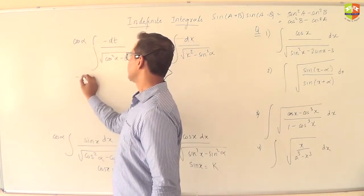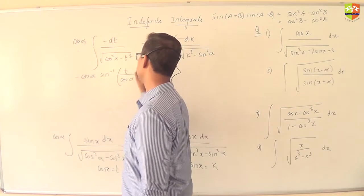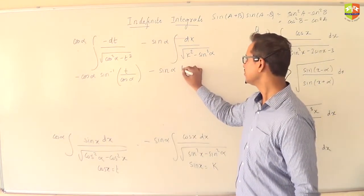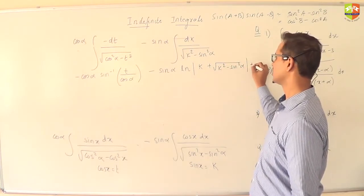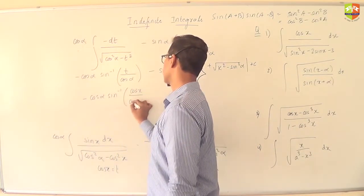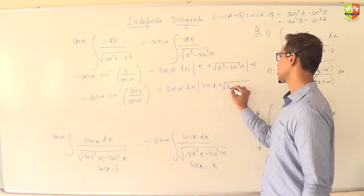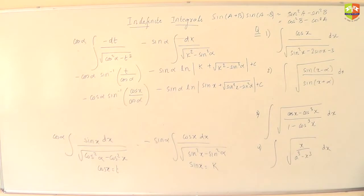So can I say this becomes minus dt cos alpha by the root of cos square alpha minus t square, and this becomes dk by the root of k square minus sine square alpha. So what is the answer to this? Minus cos alpha sine inverse cos x by cos alpha. Here what does it become? Sine minus sine alpha ln, ln sine x plus k square minus sine square alpha. So completing it back in terms of the original variables cos x by cos alpha. This is going to be the answer. Please mark it as important.